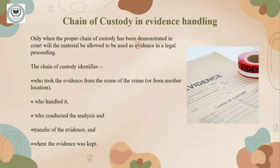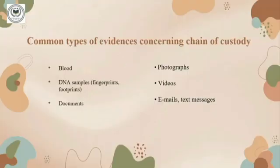Chain of custody in evidence handling identifies: who took the evidence from the scene of crime, who handled it, who conducted the analysis and transfer of evidence, and where the evidence was kept. The common types of evidence requiring chain of custody include blood, DNA samples, documents, photographs, videos, emails, text messages, and more.